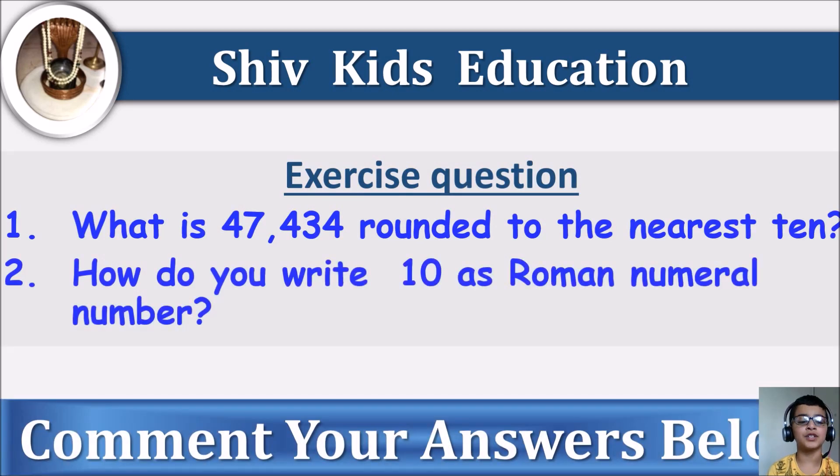Here are the exercise questions. Question 1: What is 47,434 rounded to the nearest ten? Question 2: How do you write 10 as a Roman numeral? Please find a comment your answers below.